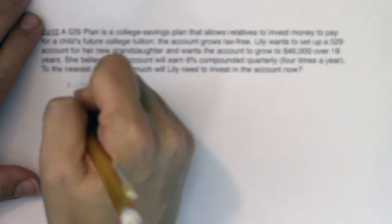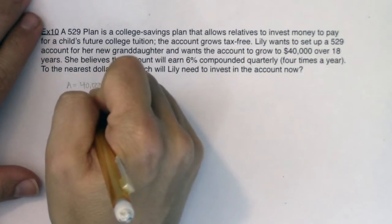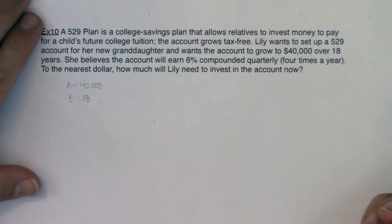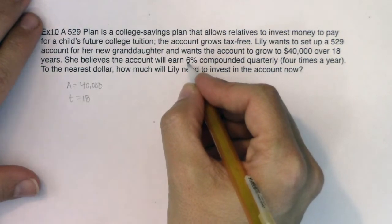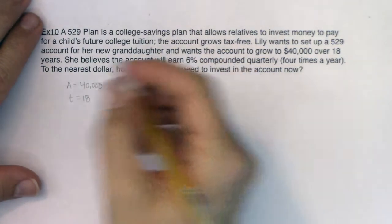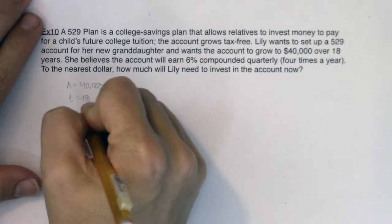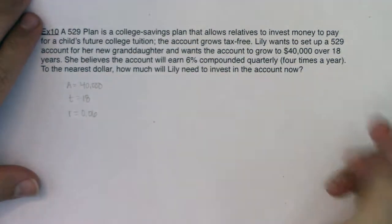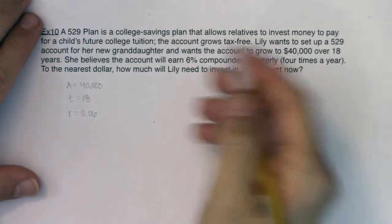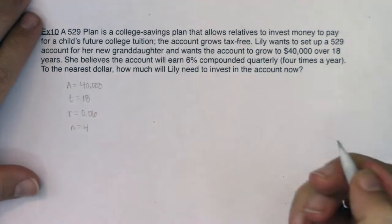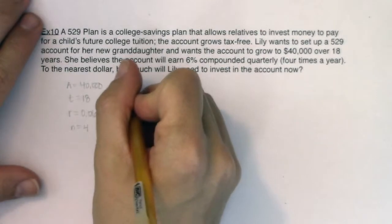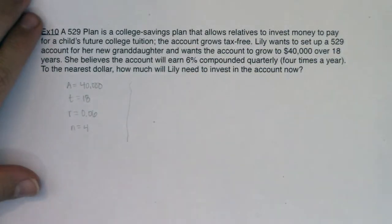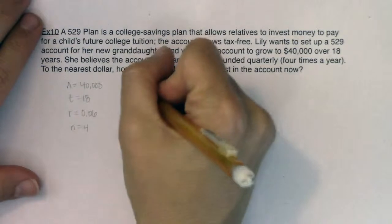We see 18 years — that's how long this account is going to be open. Once her granddaughter turns 18, she can get the money. She's going to earn 6% interest, and keep in mind we need to write that as a decimal. I'm going to get interest compounded quarterly, which means 4 times a year. So what letter am I missing? In this case, I'm missing P. Let's go use our formula and solve for P this time out.